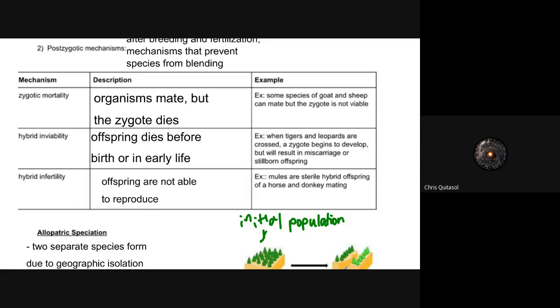Hybrid inviability is when offspring dies before or during birth or in early life, less than one to two years. When tigers and leopards cross, they successfully fertilize the zygote, but it begins to develop and due to mutations or incompatibilities, it can lead to stillborn, miscarriage, or offspring that survives for a year or two but dies due to genetic complications.